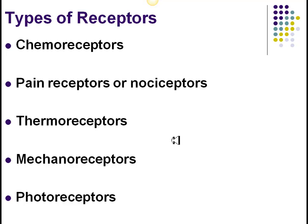Nociceptors are pain receptors, and thermoreceptors are obviously for hot and cold. Mechanoreceptors are sensitive to some kind of mechanical pressure — so pressure receptors, touch receptors. Hearing is actually a mechanoreceptor: you physically vibrate the eardrum and some inner ear bones and ultimately the fluid of the cochlea — it's a mechanical process. Photoreceptors are for photons, which are particles of light, so that's your retina.